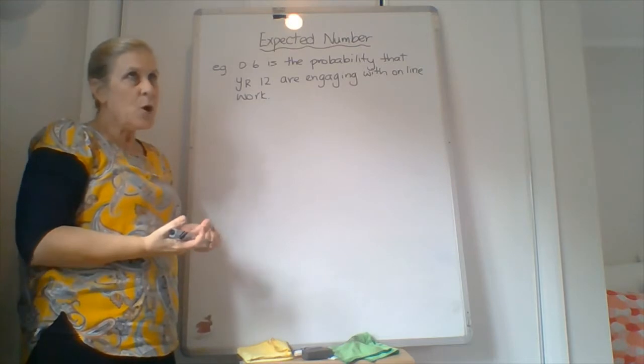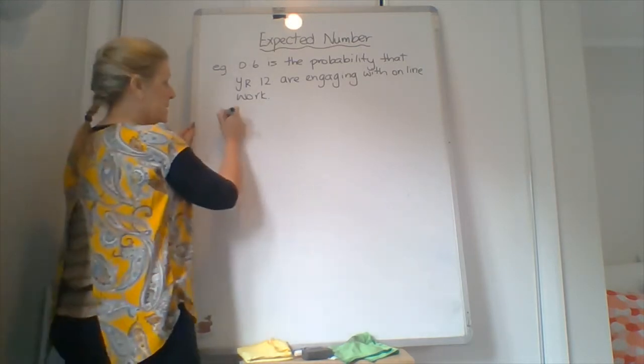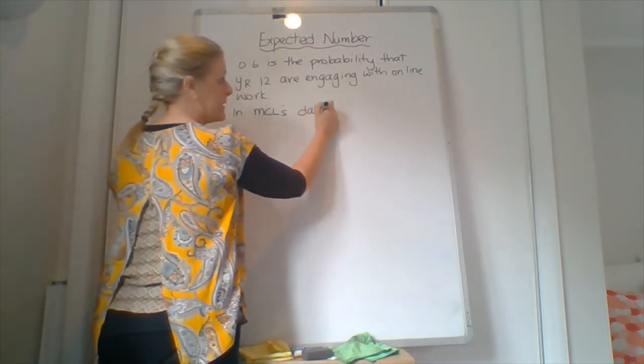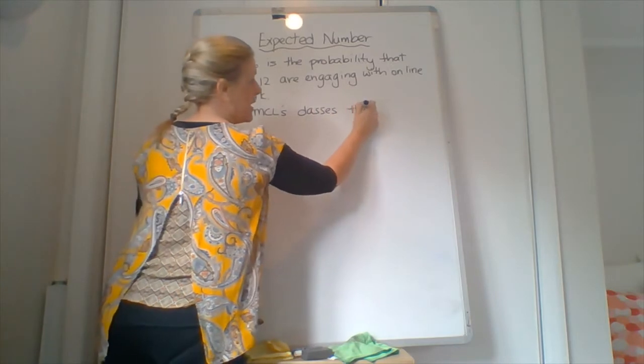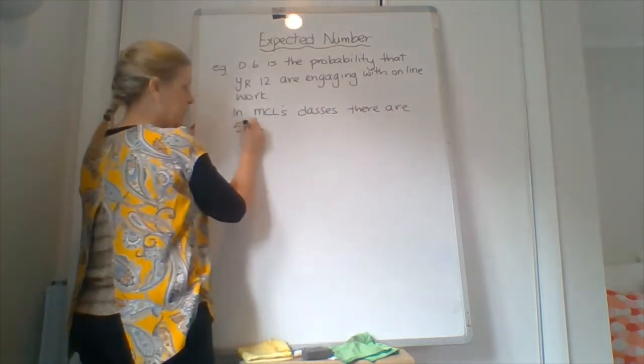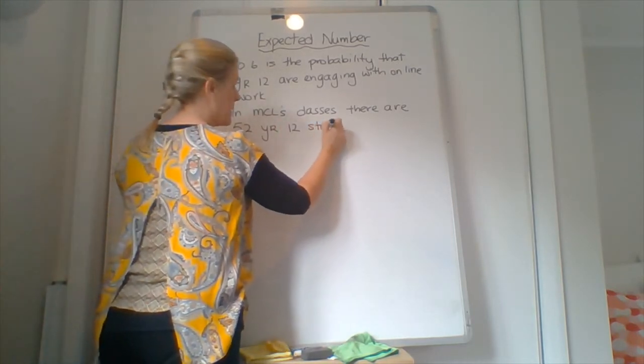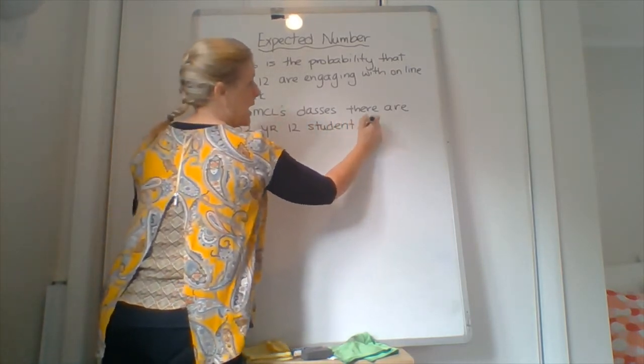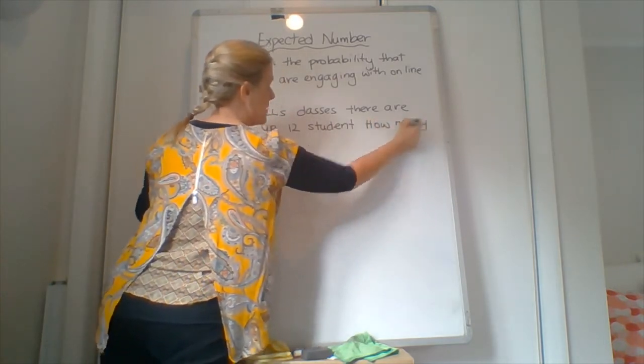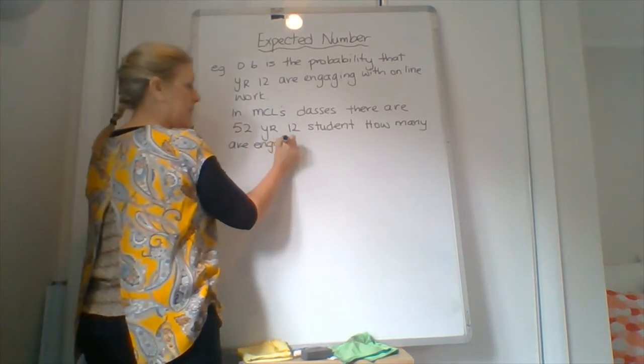So if I've got, how many have I got, 52 students? So in MCL's class, there are 52 year 12 students. How many are engaging? Pretty easy.